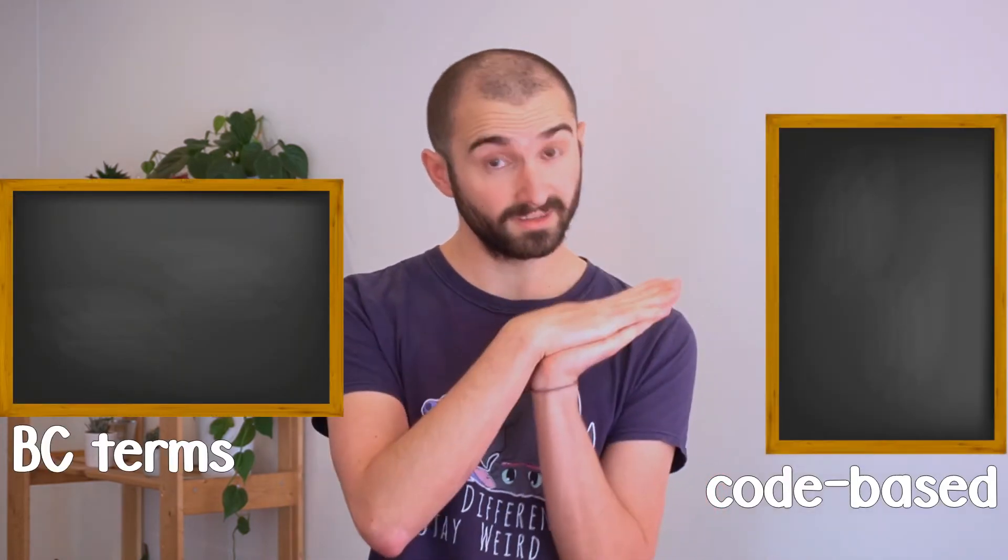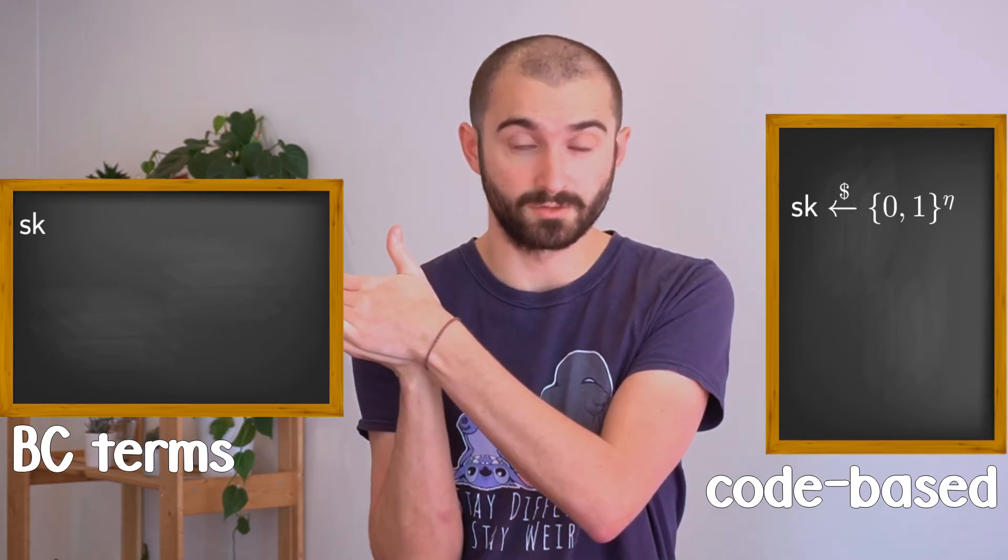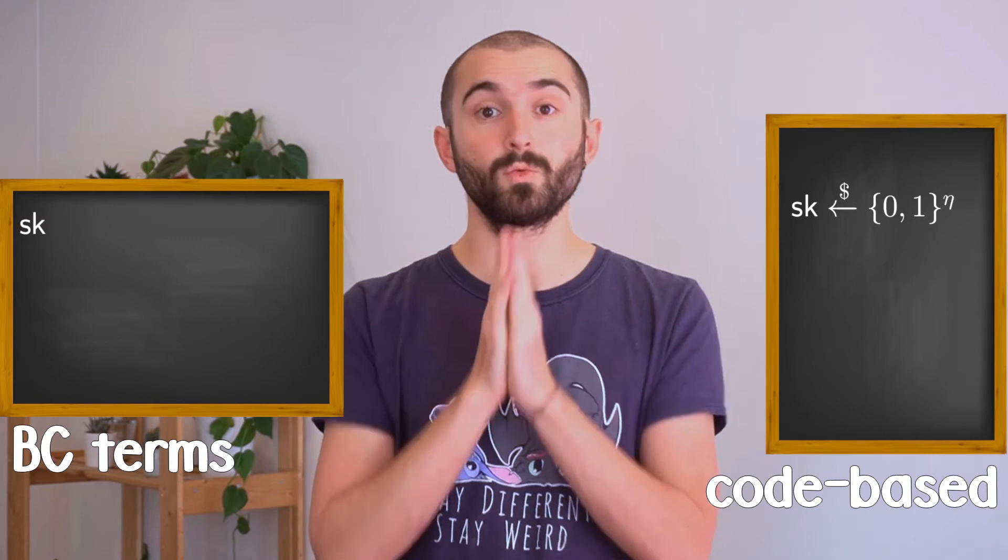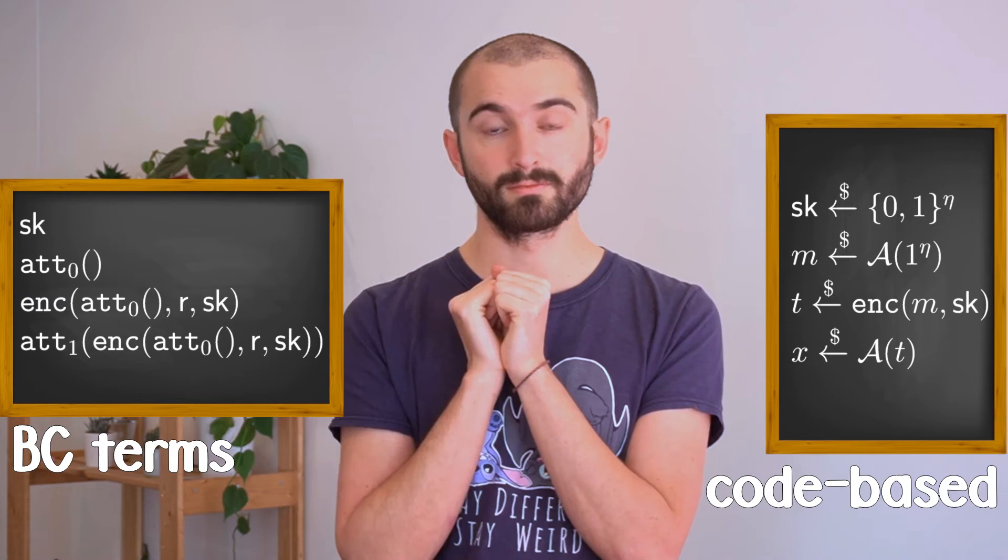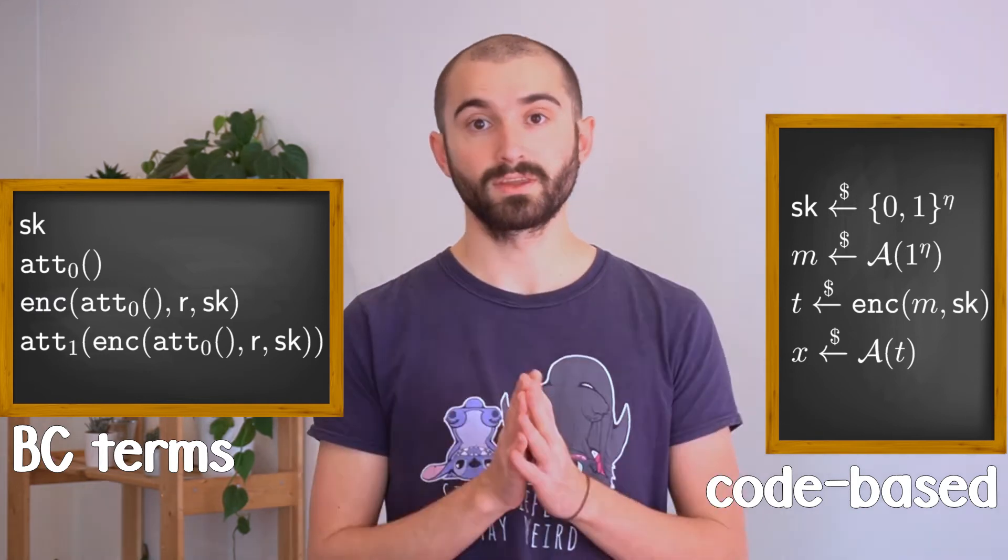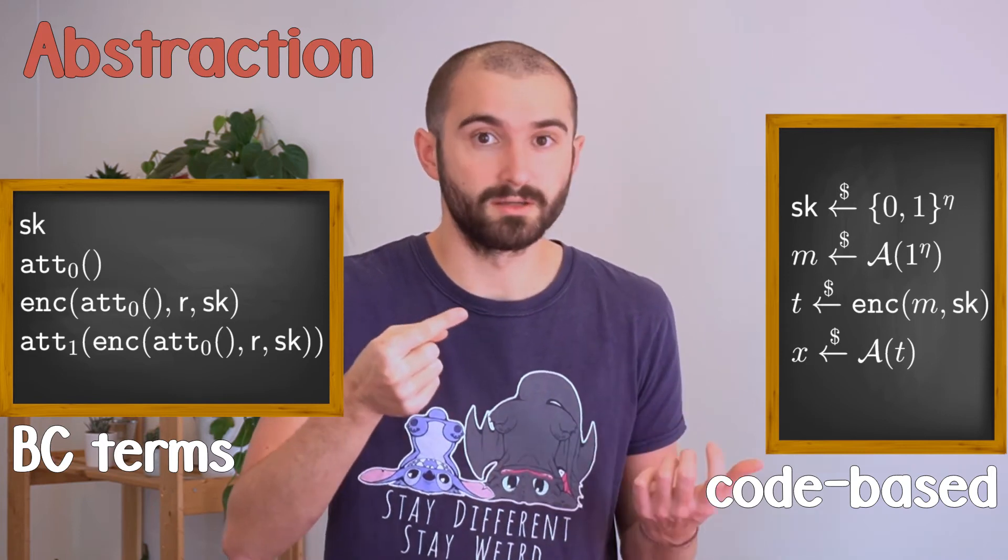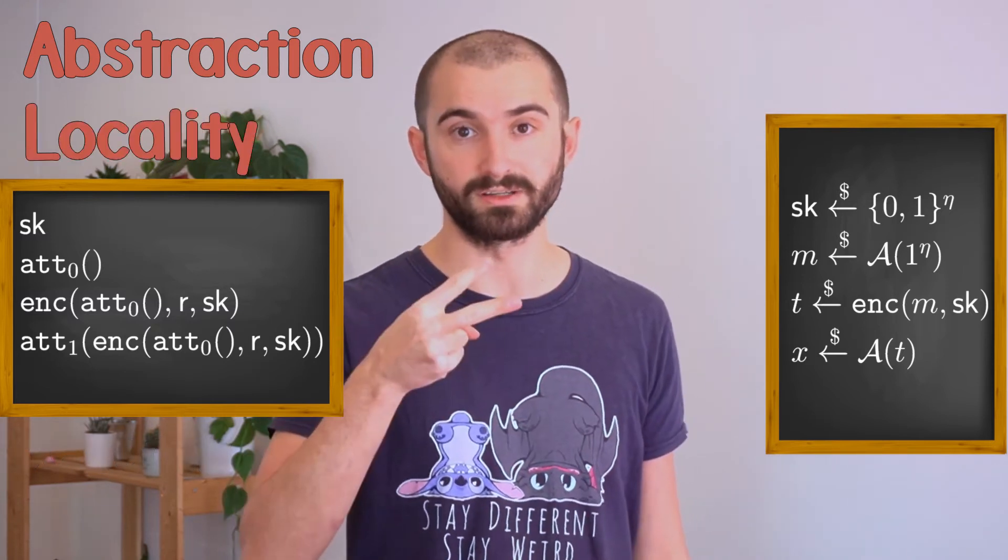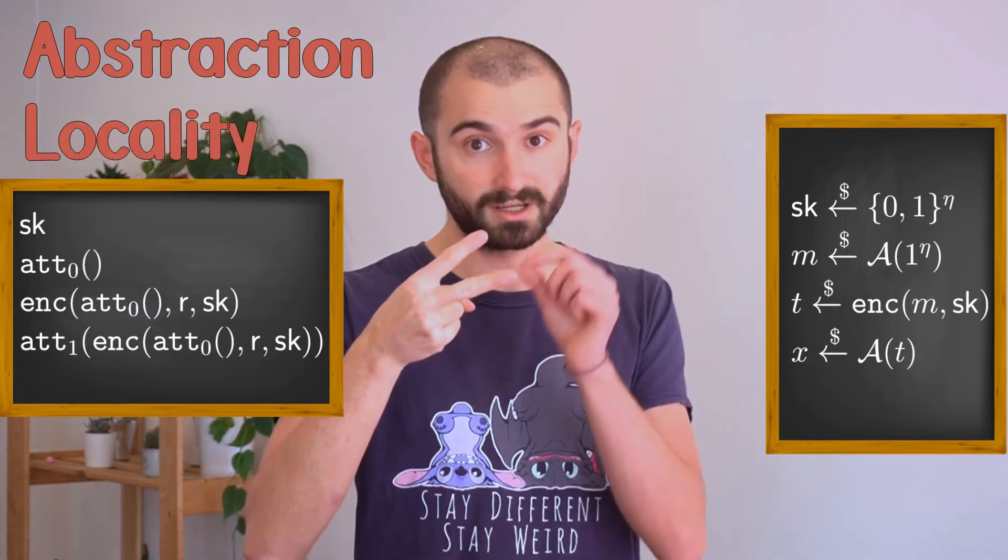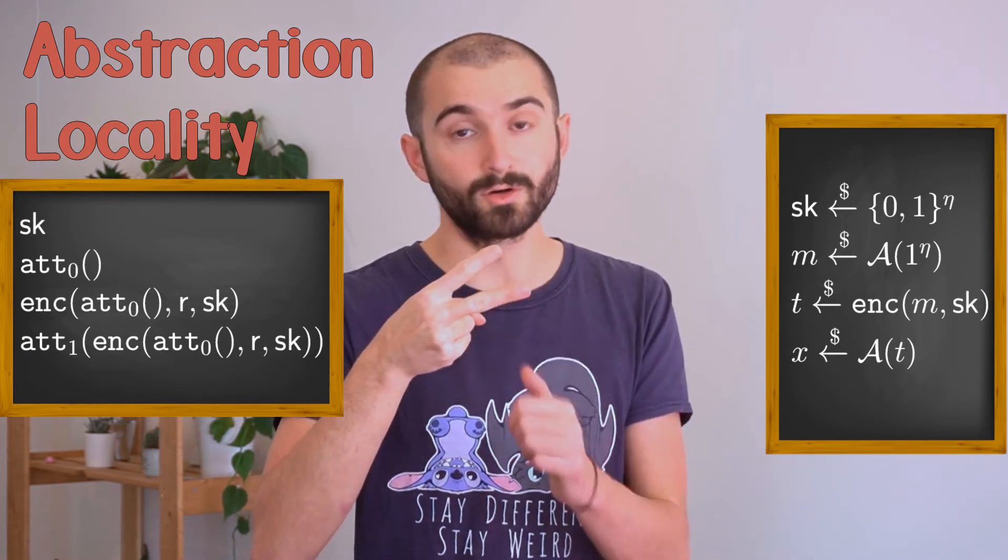What is the difference with the classical code-based modeling? On one side, you have explicit sampling. On the other side, sk is a function that takes no argument and gives back a random bit string. We do not assign a variable to an attacker call, we model the attacker using a function symbol. And so on. It has two very interesting properties. Abstraction. We don't see any probabilistic sampling, we don't see any variable assignment, etc., etc. Locality. If we reason about a term, it contains all its probabilistic dependencies. No side effects, no weird states.